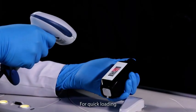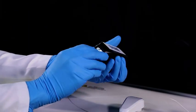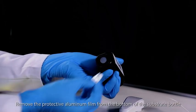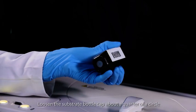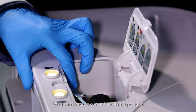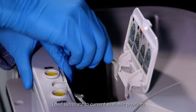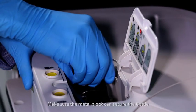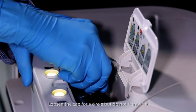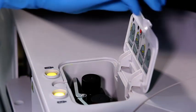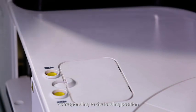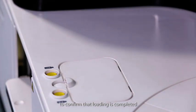For quick loading, scan barcode on the substrate bottle. Remove the protective aluminum film from the bottom of the substrate bottle. Loosen the substrate bottle cap about a quarter of a circle. Load substrate to current available position. Make sure the metal block can secure the bottle. Loosen the cap for a circle, but do not remove it. Press the indication light corresponding to the loading position to confirm that loading is completed.